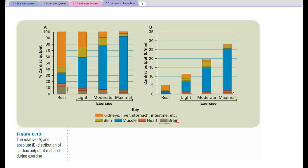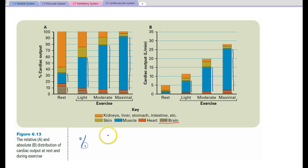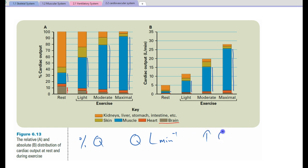Our muscles, as we would expect, are receiving during exercise a greater and greater percentage of cardiac output, which results in a massive increase in actual volume being delivered — primarily we want to see skeletal muscle receive an increase in percentage of cardiac output, or in litres per minute of cardiac output, so that we can increase oxygen delivery.